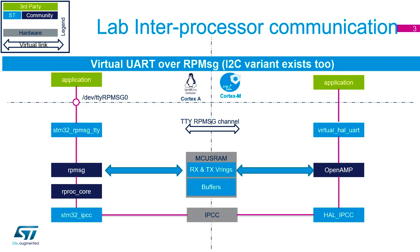Here's what's actually going on for communications in this project. An application running on the A7 side uses a section called STM32 remote program message, which goes into community drivers called RPMessage and rprop core. These control the IPCC hardware via the ST driver, which sends control flags to the Cortex-M side. The RPMessage block uses a buffer in RAM to store the message to transfer from the A7 to the M4.